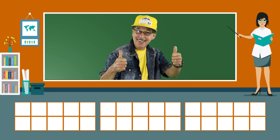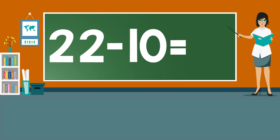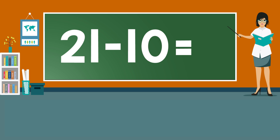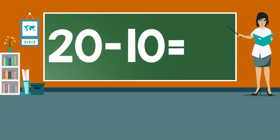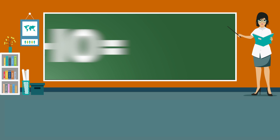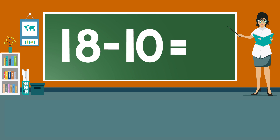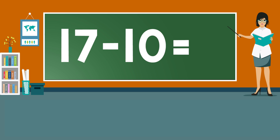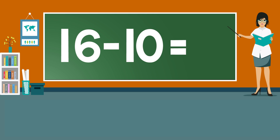Now answer on your own. 22 minus 10 equals... 21 minus 10 equals... 20 minus 10 equals... 19 minus 10 equals... 18 minus 10 equals... 17 minus 10 equals... 16 minus 10 equals...